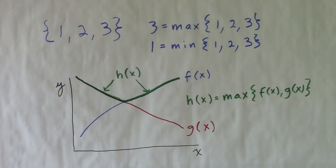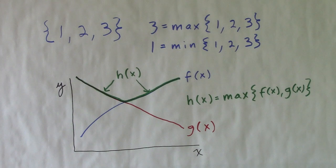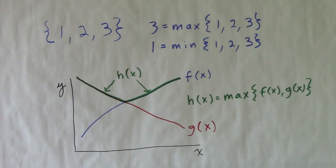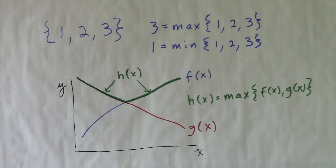If you've never seen this notation before, don't worry. Take the set of numbers 1, 2, and 3. 3 is the maximum, and 1 is the minimum. The definite integral of a function is just a number that can be compared with other numbers. You can take two functions, f and g, and define a third function, h, by taking the top parts of the two functions.